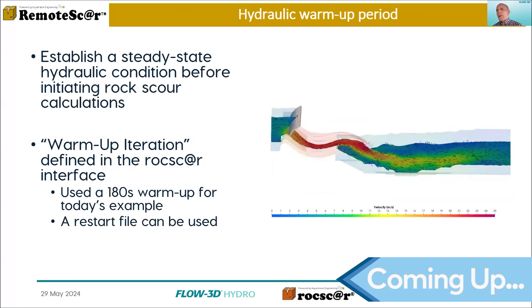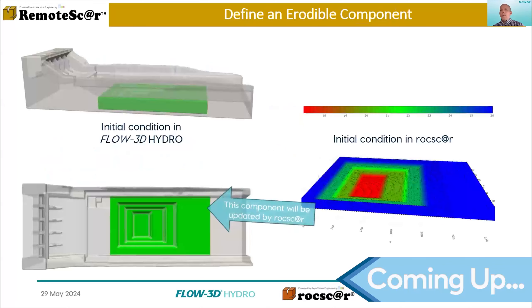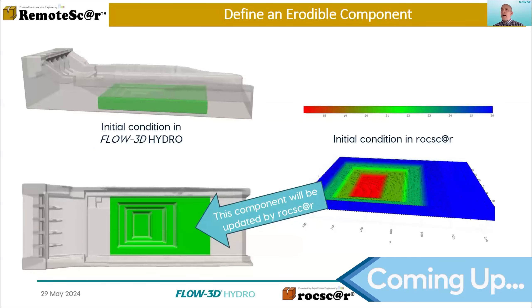RockScour can read in an initial restart as your initial hydraulic condition for the RockScour calculations. So that's what it looked like in Flow3D. You're defining this green component in Flow3D — that is what can scour.